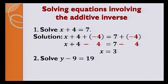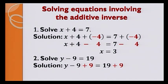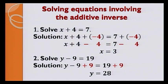Let's have a look at the second equation: y minus 9 is equal to 19. We need to eliminate minus 9 by adding the additive inverse of minus 9, which is plus 9. Therefore, we get y minus 9 plus 9 is equal to 19 plus 9, and your answer is y is equal to 28. You can check your solution by substituting y equals 28 on the left-hand side: 28 minus 9 equals 19. Therefore the statement is true.